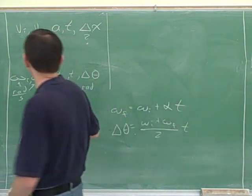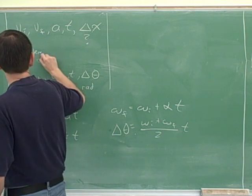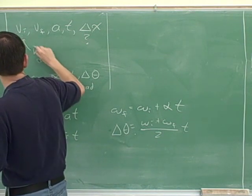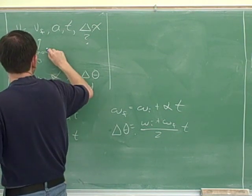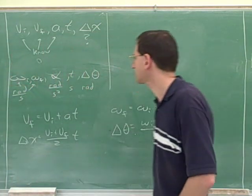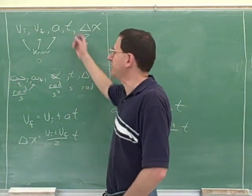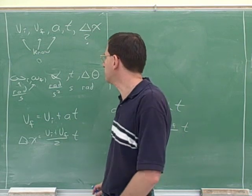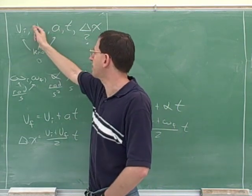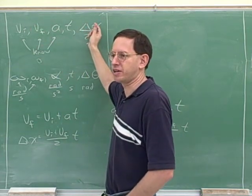So you study the information in the problem until you can figure out three things that you know. For example, you might know this, and this, and this. And then you're all ready to pick the right equation to use. Which equation do you want to use? The equation that has the three variables that you know and the one that you're trying to figure out.